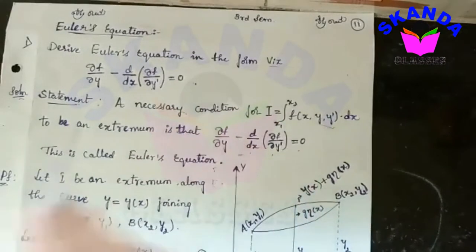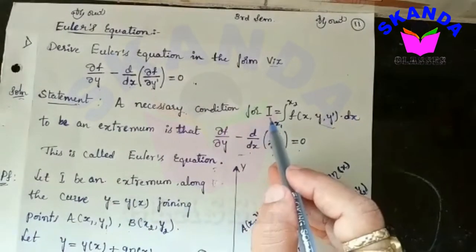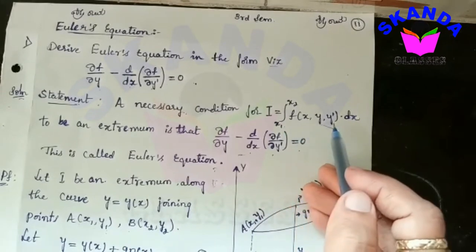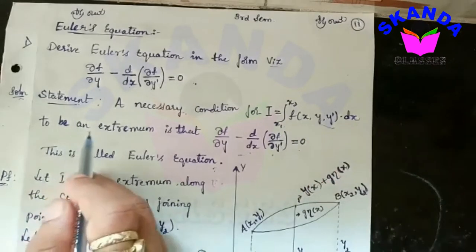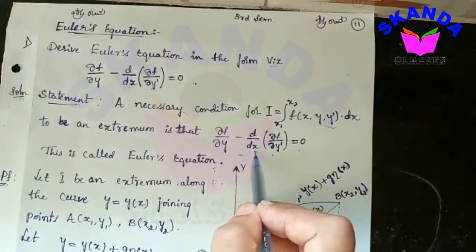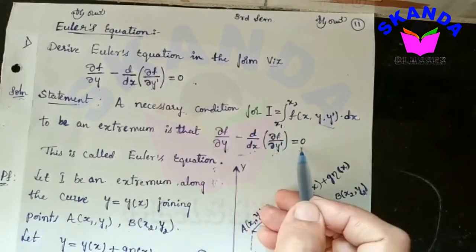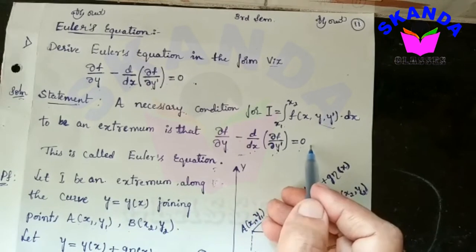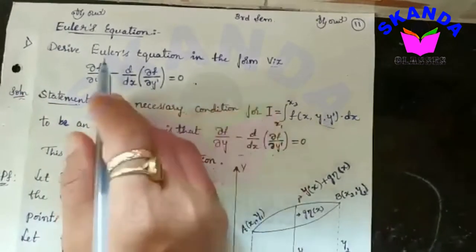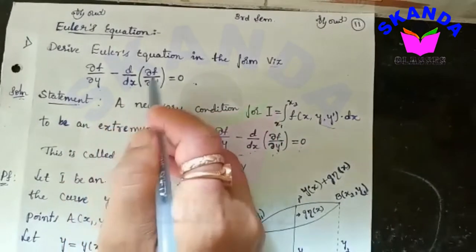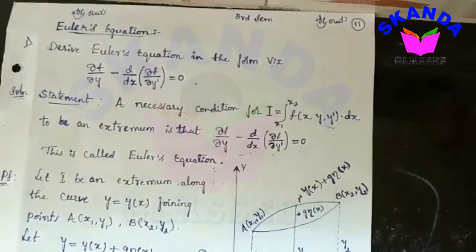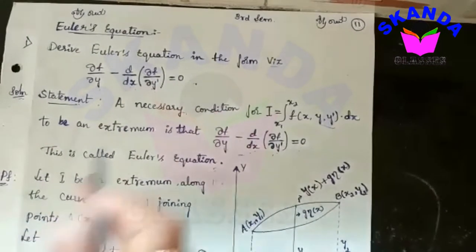In examinations, the question asks for a necessary condition for i equal to integral from x1 to x2 of f(x, y, y') dx to be an extremum, which is that ∂f/∂y minus d/dx of ∂f/∂y' equals 0. Either this type or 'derive Euler's equation in the form ∂f/∂y minus d/dx of ∂f/∂y' equals 0' may be asked. Both types are asked but the solution is the same.